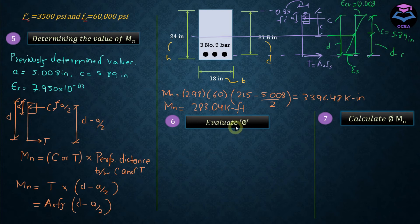And in step number six is the calculation of phi, which is the strength reduction factor. We need to multiply this factor with the nominal strength, that is MN, and this would give us the design moment strength or the total resistance provided by the cross-section. So phi can be evaluated using this expression here: phi is equal to 0.65 plus net tensile strain minus 0.002, multiplied by 250 over 3.